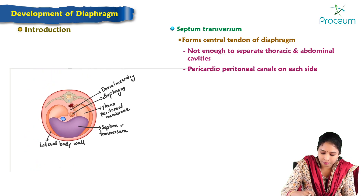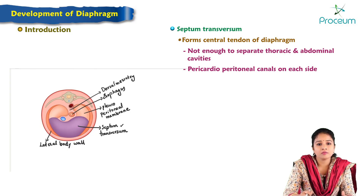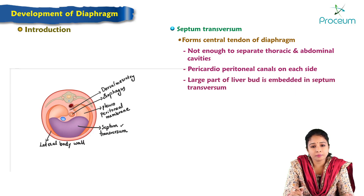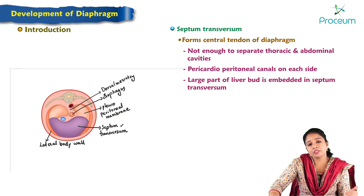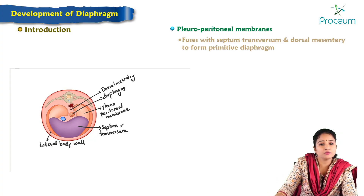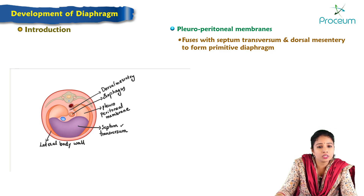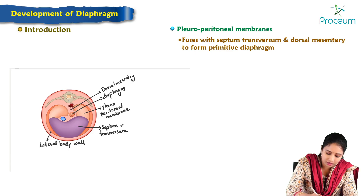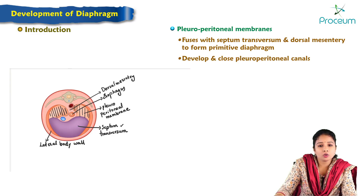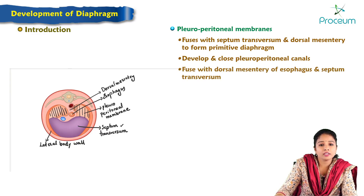The communication is formed by pericardioperitoneal canals present on each side of the developing foregut. The large part of the liver bud is embedded in the septum transversum, so the connective tissue of the liver is also derived from it. Pleuroperitoneal membranes fuse with septum transversum and dorsal mesentery to form a primitive diaphragm. These membranes develop and close the pleuroperitoneal canals, fusing with the dorsal mesentery of the esophagus.